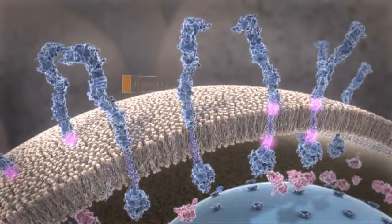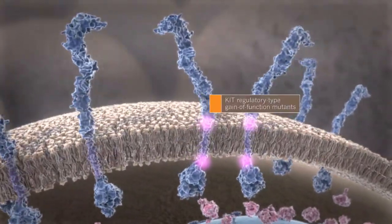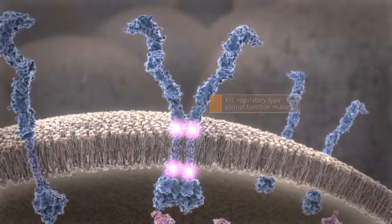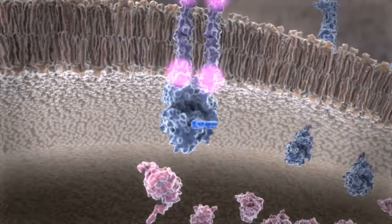If ligand is absent, wild-type KIT will remain auto-inhibited. However, KIT mutations that disrupt its juxtamembrane domain can release this auto-inhibition in the absence of ligand binding.